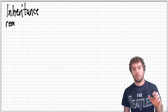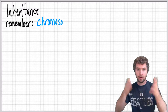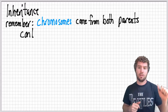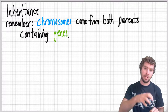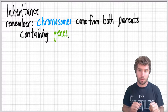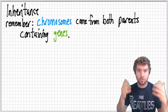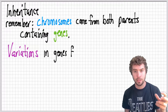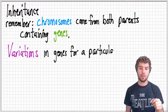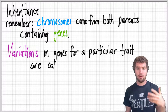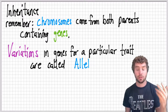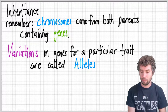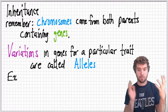Inheritance has a lot to do with parents passing down genes through the chromosomes. In humans, one parent gives 23 chromosomes and the other gives 23 chromosomes, and within those chromosomes there are all the genes — all the codes for all the different genes. Variations for particular traits within those genes are called alleles.